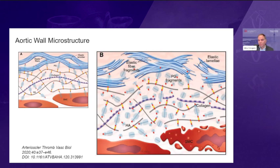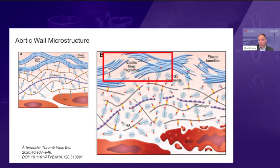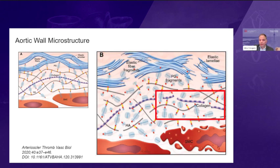In a thoracic aortic aneurysm, we see a constellation of changes on histopathology. We start to see death of smooth muscle cells and fragmentation of proteoglycans, whose fragments pool around areas of elastin injury. The elastin fibers themselves become degraded, torn, and damaged. Finally, we begin to see changes in collagen — the damaged elastin is replaced with collagen, but this collagen isn't always the same type that was there originally.